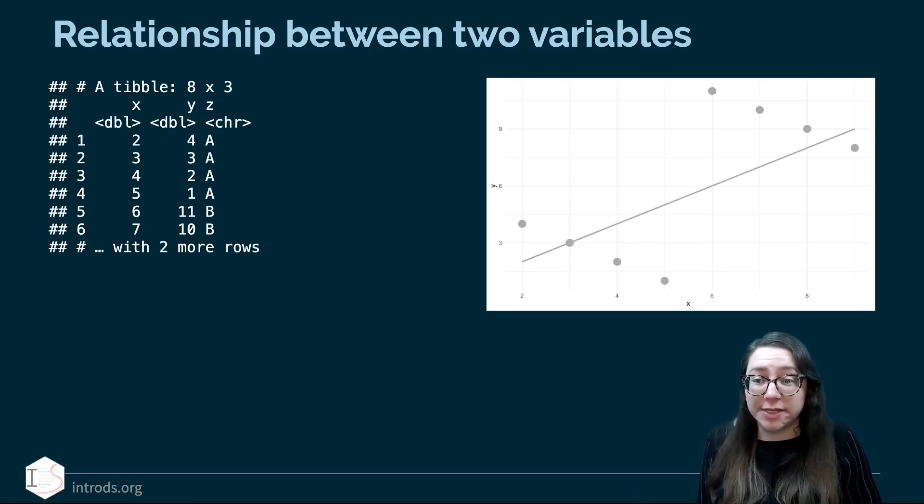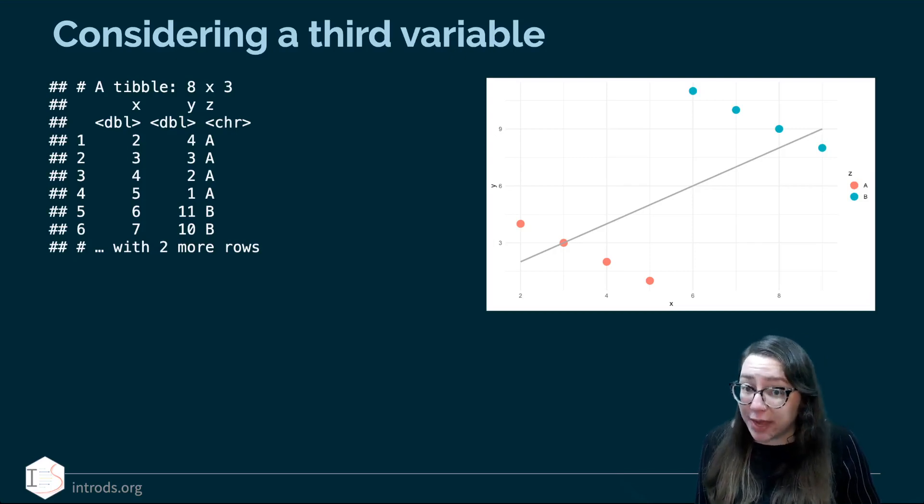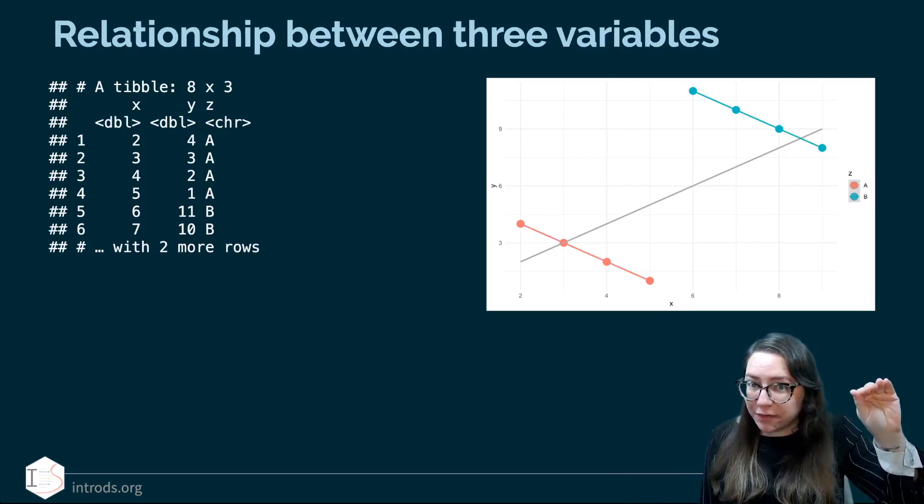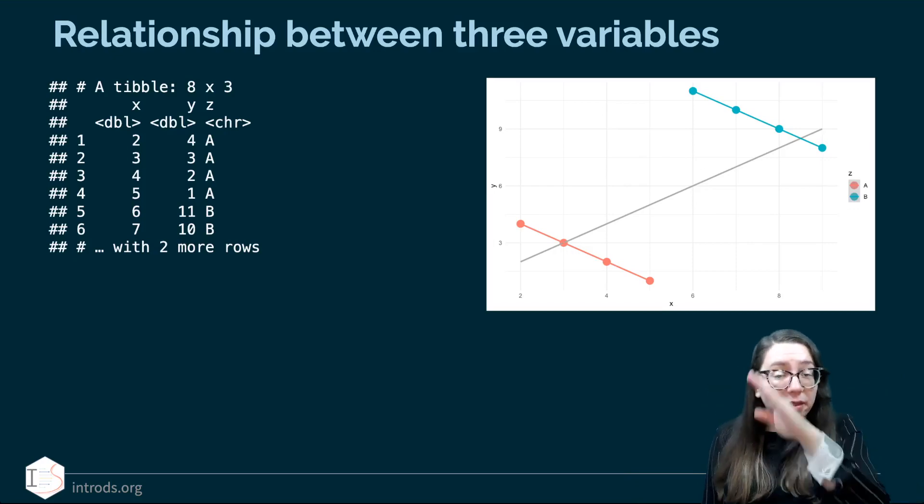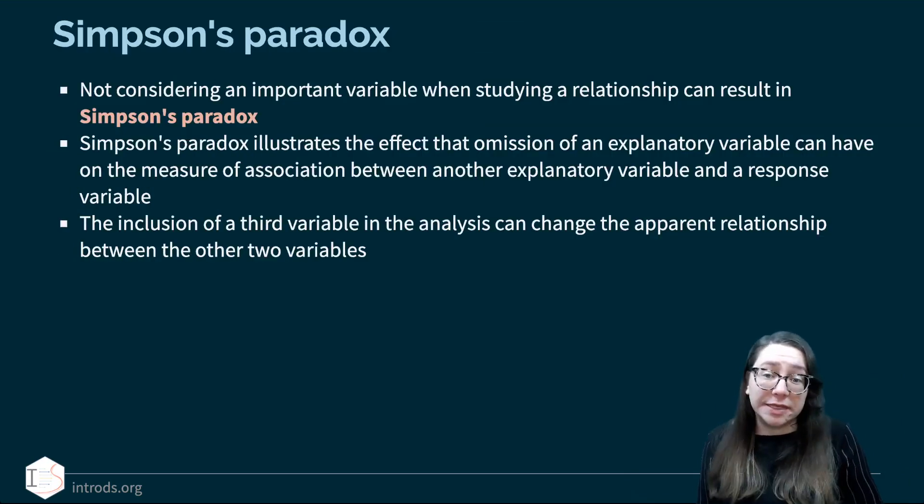But there is a third column in this dataset, the Z column. So if I was to actually then color my points by that, we can see the distinction a little bit better. And if I was to say when I'm thinking about evaluating the relationship between X and Y, I actually want to keep in mind Z as well, then the lines that I would draw are very different. So when I think about the data overall, I'm seeing a positive association, but when I think about the two groups on their own, I'm seeing a negative association. So not considering an important variable when studying a relationship can result in what we call Simpson's Paradox.